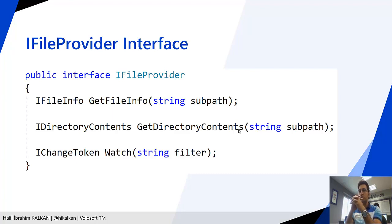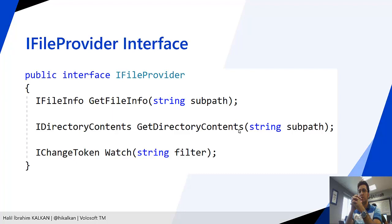ASP.NET Core works with the IFileProvider interface to read files and directory contents in a web application. This interface is very simple. The GetFileInfo method is used to get a single file's content, while GetDirectoryContents is used to get a list of directories and files inside a folder. The Watch method is used to get notified when a file or folder changes, so we can update our cache when a file changes.